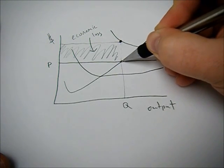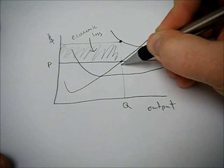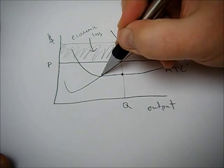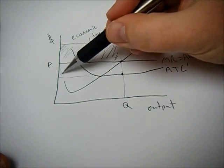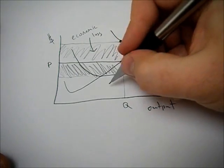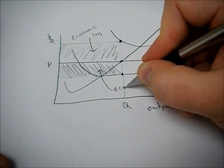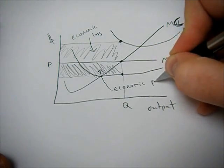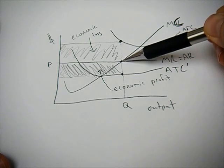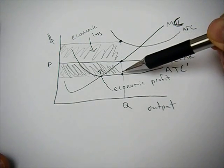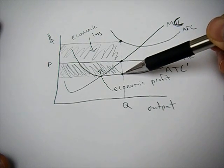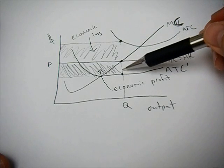But now, marginal revenue is higher. We draw the line down to average total cost. Draw that line across. And this right here represents our economic profit. We're making an economic profit because the price we're receiving or the marginal revenue of that good is higher than the average cost required to produce that good. So we're making a profit. Hence, economic profit.